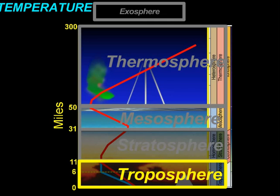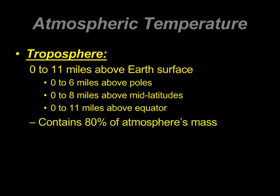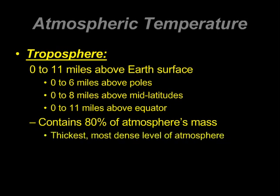Our fourth and final layer based on temperature is the troposphere — where we human beings reside. The troposphere is anywhere from 0 to 11 miles above Earth's surface, about 0 to 6 miles at the poles, and about 0 to 8 miles where we are, and up to 0 to 11 miles above the equator. Overwhelmingly, this is where most of the mass of Earth's atmosphere is found — it's the thickest and most dense level. It also contains the biosphere, and this is overwhelmingly where our weather occurs.